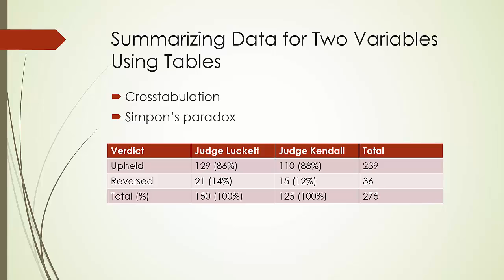For each judge, a cross-tabulation was developed based on verdict — appealed or reversed — and type of court: common police or municipal. Suppose the two cross-tabulations were combined by aggregating the type of court data. The resulting aggregated cross-tabulation shows the number of appeals in which the verdict was upheld and the number in which it was reversed for both judges. The summary shows that 86% of verdicts were upheld for Judge Luckett, while 88% of verdicts were upheld for Judge Kendall. It seems like Judge Kendall is doing a slightly better job.